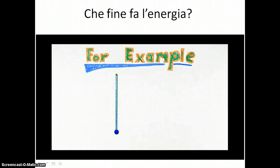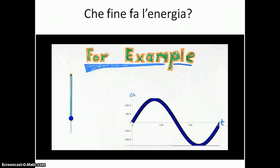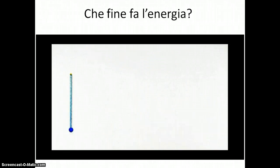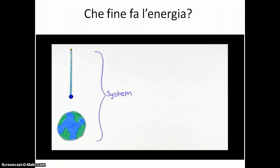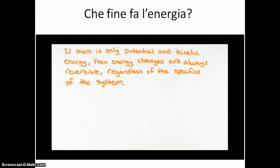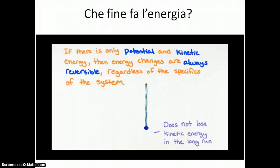If we consider as our system just the mass, then we know that the kinetic energy gains and losses are due to work done by the weight force and the spring force. We see the change in kinetic energy shown in blue in the graph, and we see that sometimes these forces transfer kinetic energy out of the system and sometimes back in. Or, if we make a different choice of system that includes the agents — the spring and the Earth — then we can describe the shuffling of energy around as changes in potential energies along with the change in kinetic energy of the mass. These kinds of energy changes, which involve only potential energy changes and kinetic energy changes, are always reversible, regardless of what system we choose.